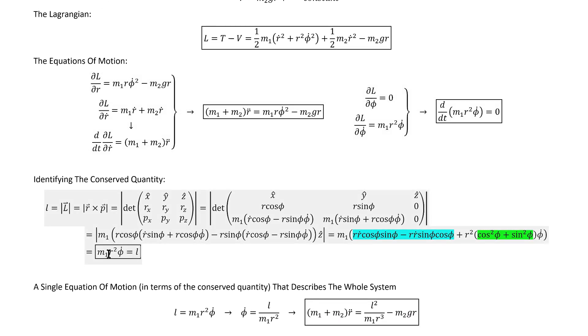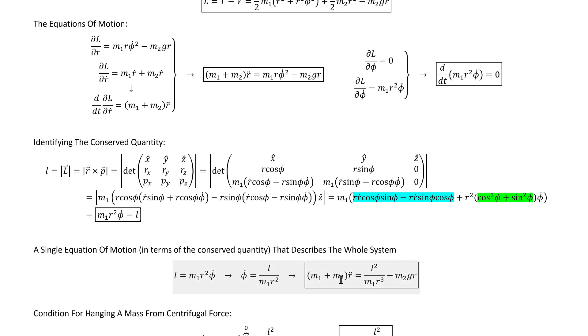However, because we've identified this as a constant of the motion, it allows us to entirely eliminate the phi variable from the problem. Doing that via substitution gets us this single equation of motion that describes the whole system.